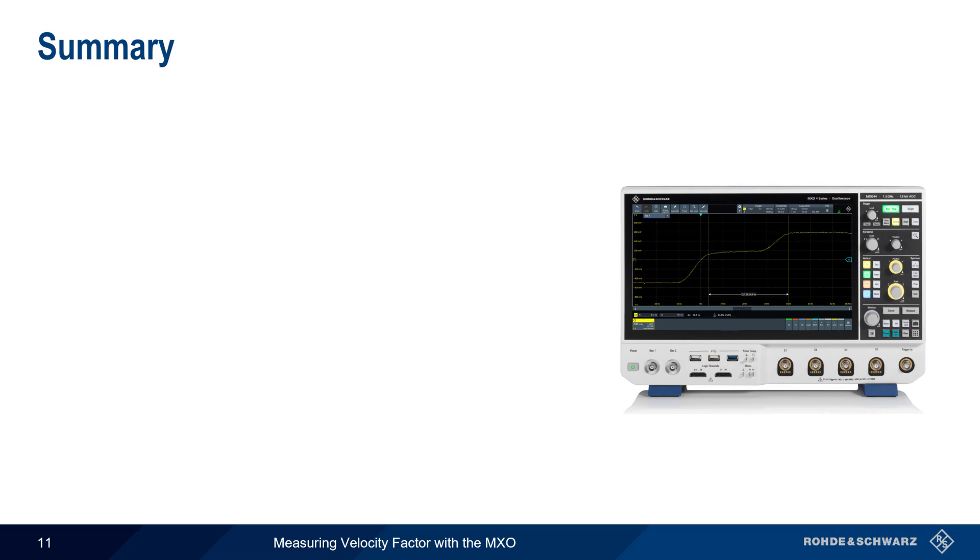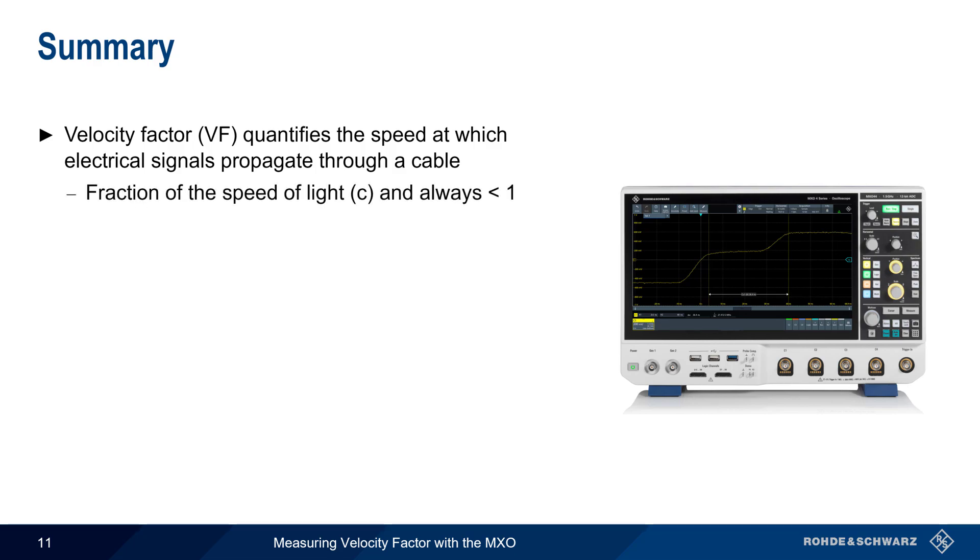Let's end with a brief summary. Velocity factor quantifies the speed at which electrical signals propagate through a medium, in this case through a coaxial cable. It's expressed as a fraction of the speed of light and therefore is always less than 1. Velocity factor can be measured in a number of different ways, and in this presentation we showed how this can be done using Rohde & Schwarz MXO series oscilloscopes.